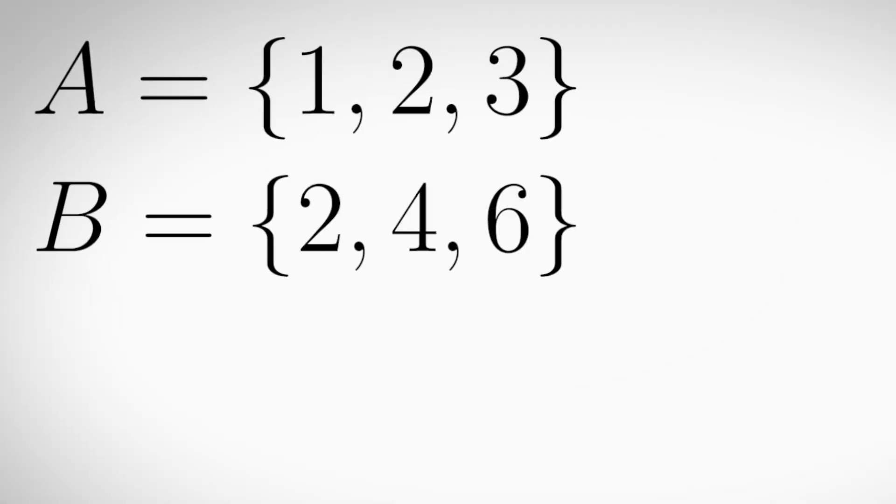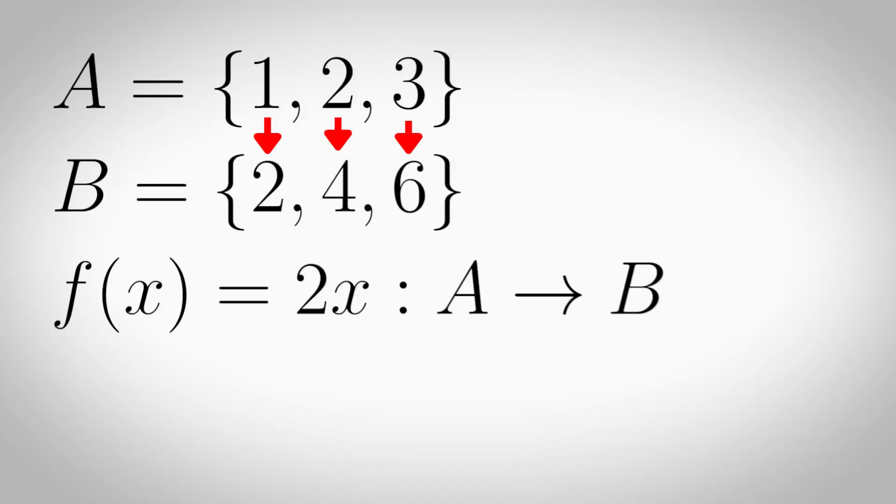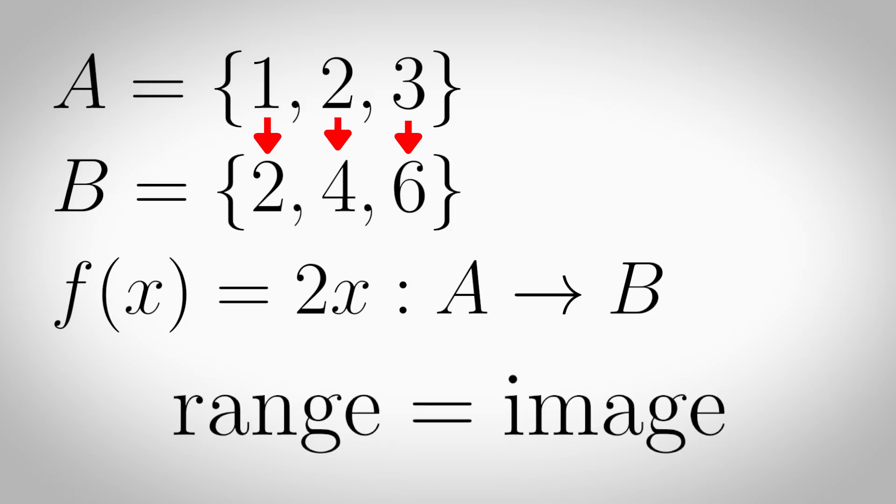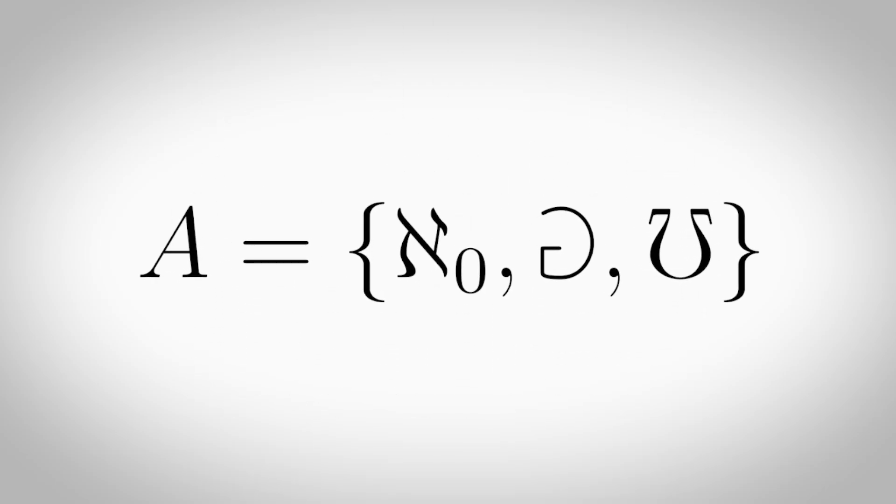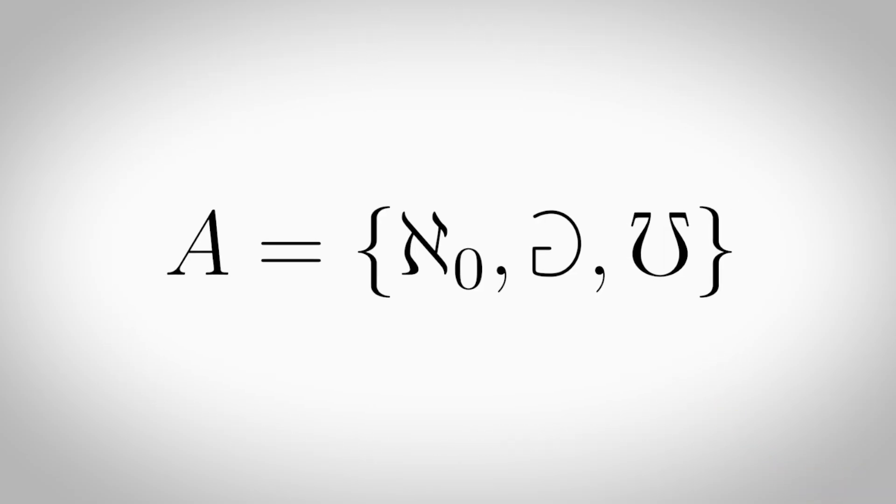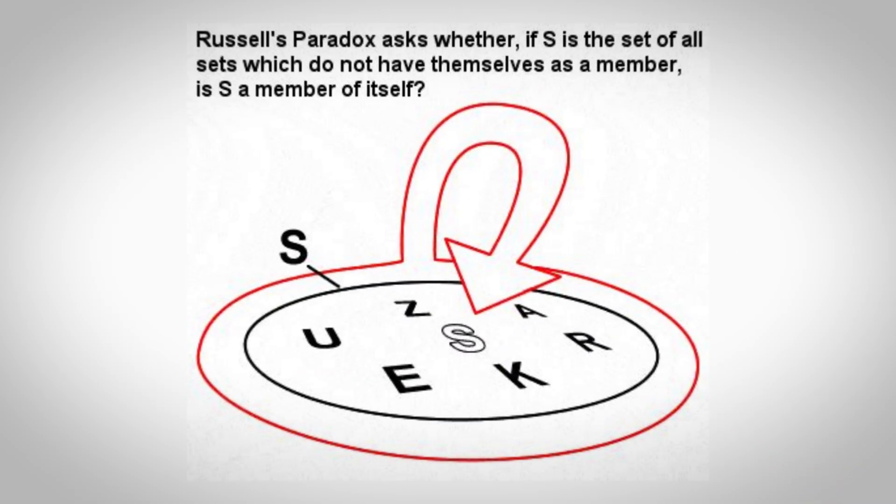Two sets A and B have the same cardinality if there exists a bijective function, meaning the function is both 1 to 1 and the range of outputs is equal to the image of the function. Naive set theory - This is the version of set theory that makes sense. A set is just a collection of elements, like how a bag is just used to hold a bunch of objects. But this version leads to contradictions like Russell's paradox.